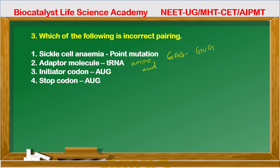Option 4 states that stop codon is AUG — this is incorrect. Stop codons are UAA, UAG, and UGA. AUG is the initiator codon, not a stop codon. So the incorrect option is option four.